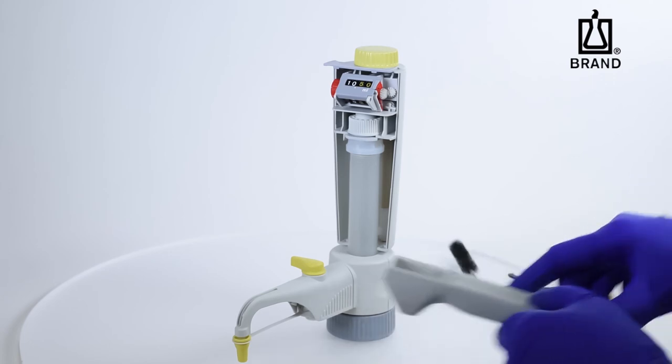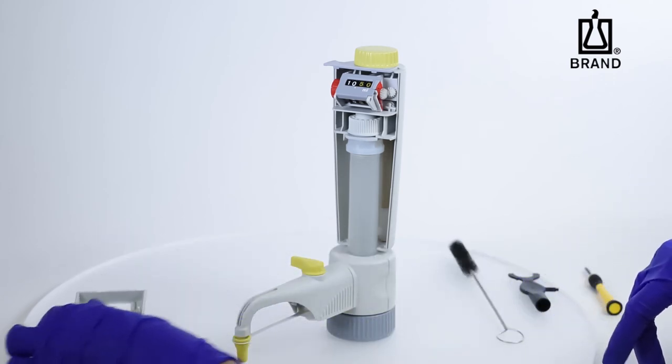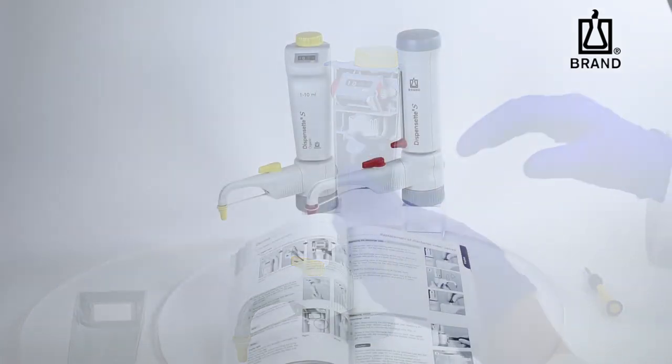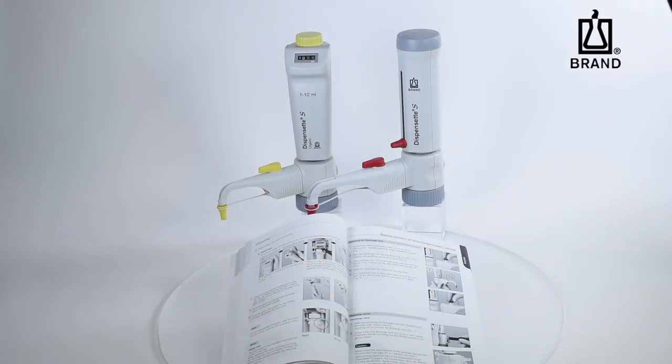The Dispenset S completely disassembles for cleaning. Cleaning instructions can be found in your operating manual. Refer to the operating manual for additional care and maintenance instructions to ensure that your dispenser stays in proper working order.